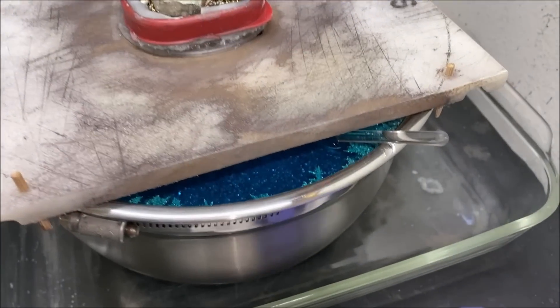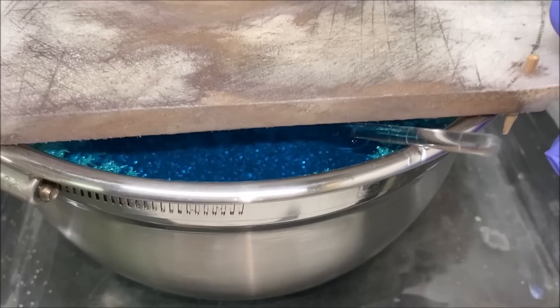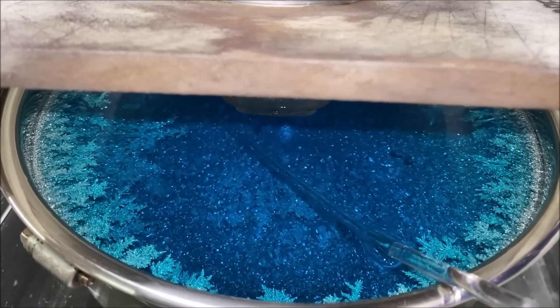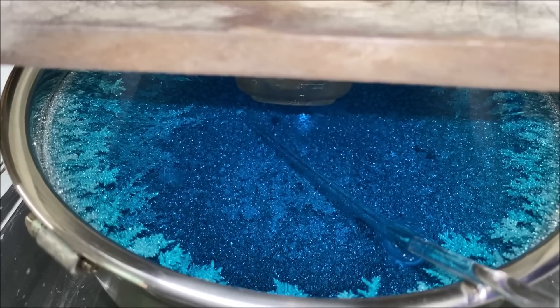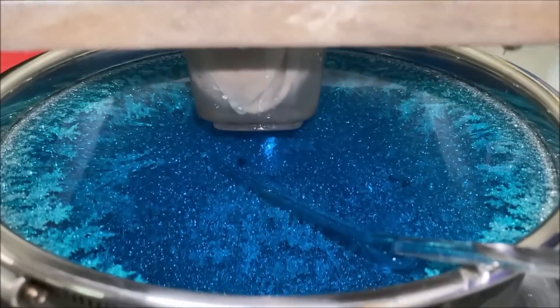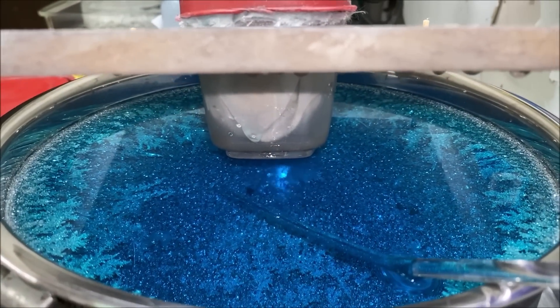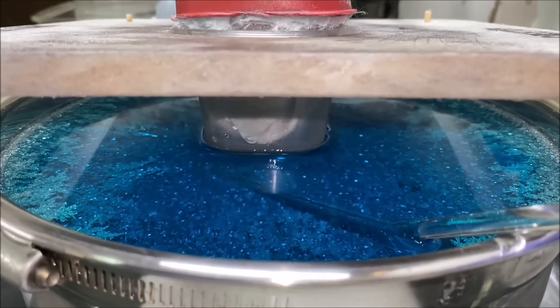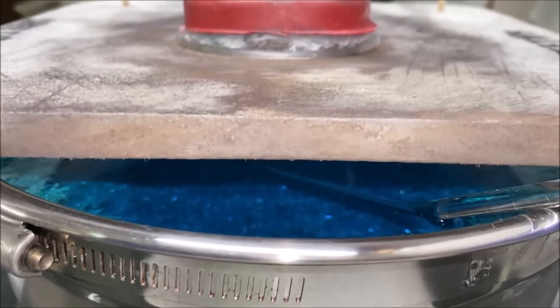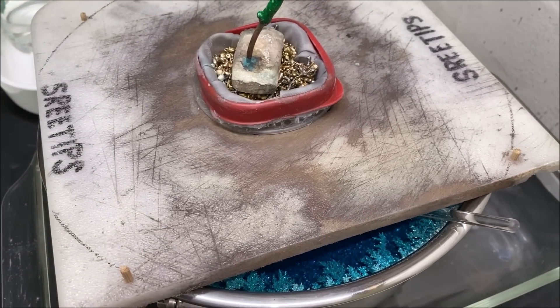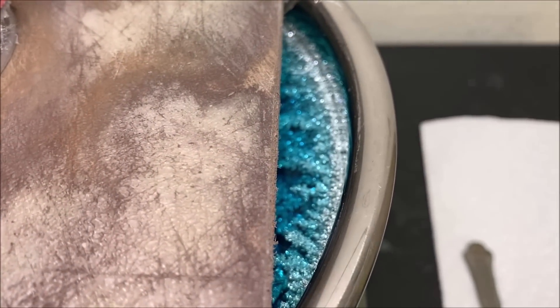Look at that beautiful silver crystal growing in there now, very nice. There's the bottom of the anode basket. And you see it when I lower the top, the anode basket submerges and is suspended in the electrolyte.